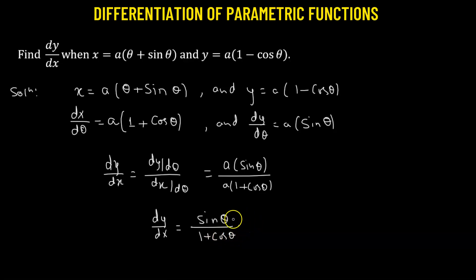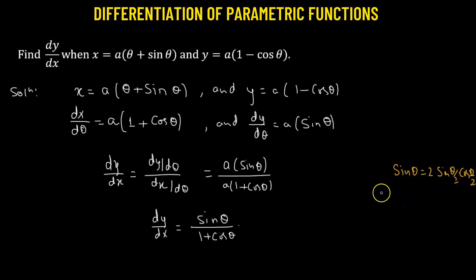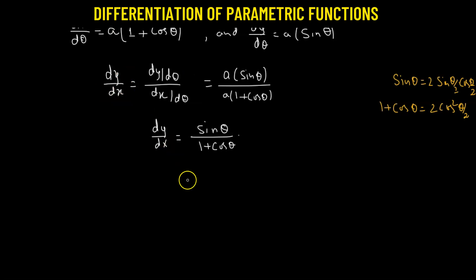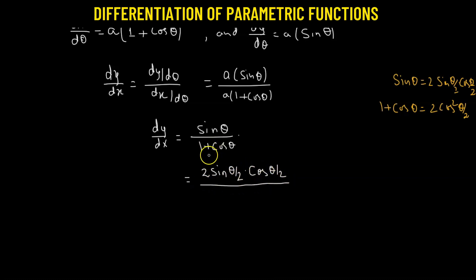This is the required value, but we can further simplify using the half-angle formulas. Sine theta equals 2 times sine(θ/2) times cosine(θ/2), and 1 plus cosine theta equals 2 times cosine squared(θ/2). Substituting these in, the 2s cancel and one factor of cosine(θ/2) cancels, leaving sine over cosine, which is tangent(θ/2).